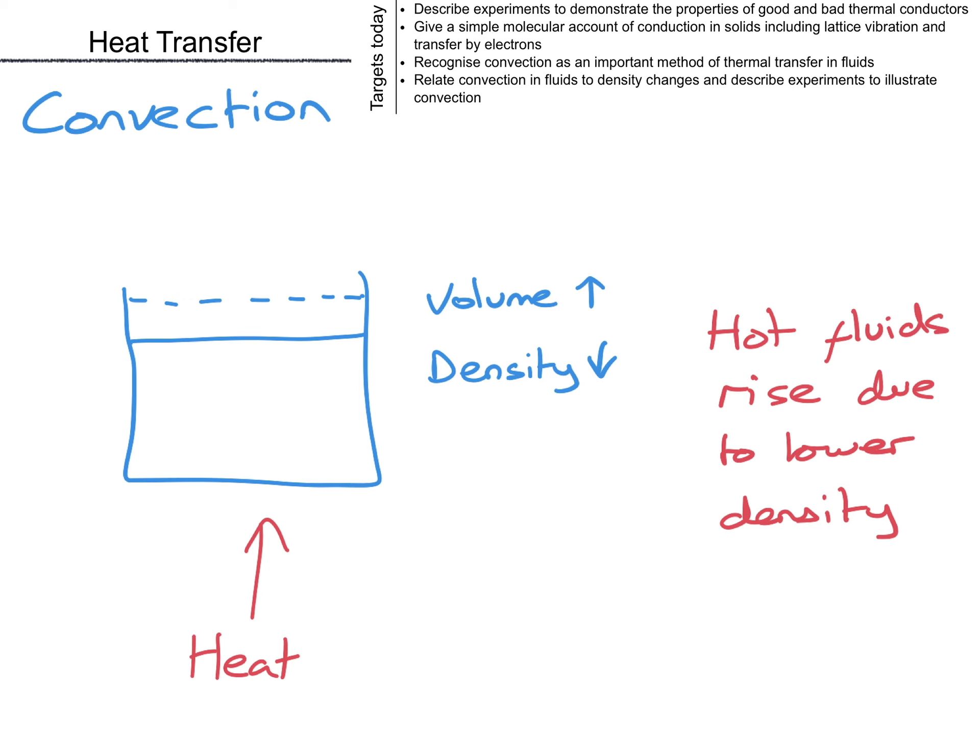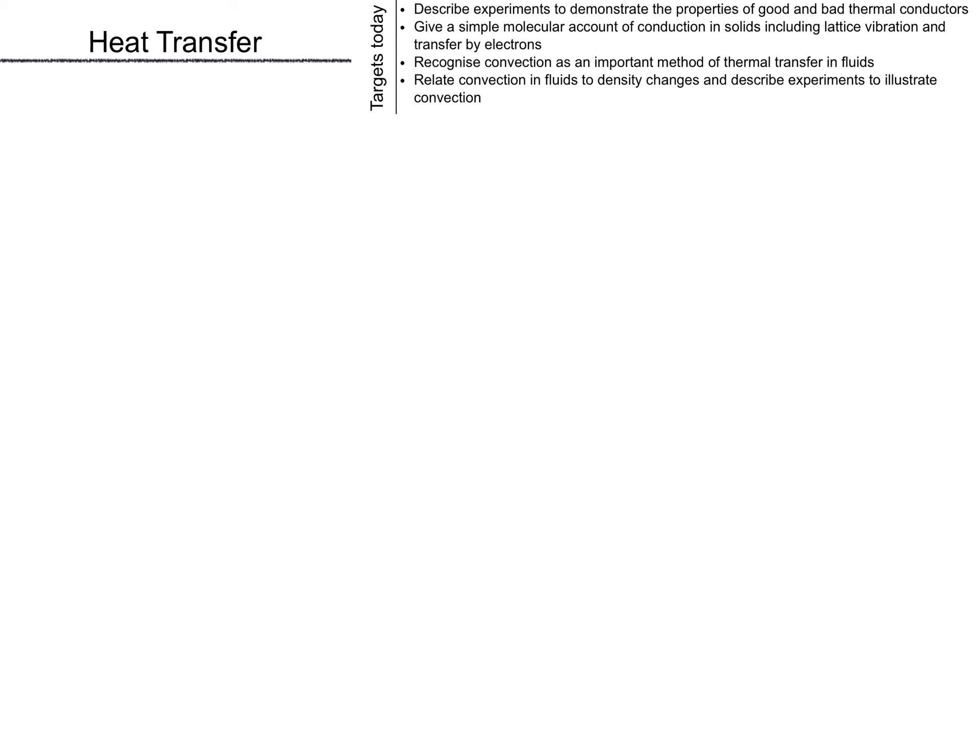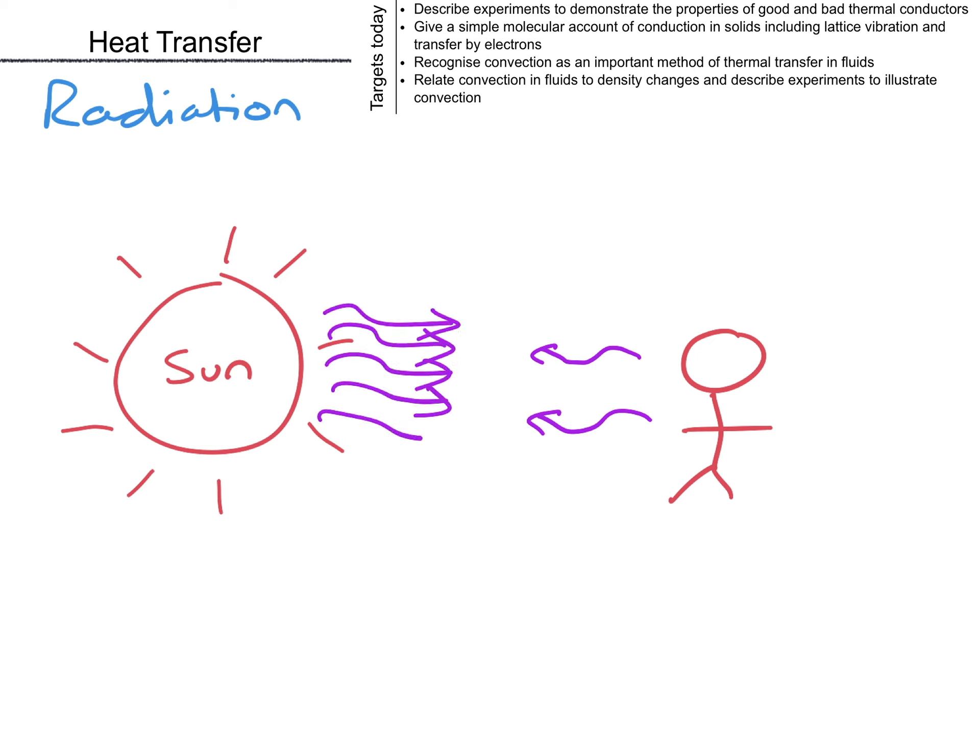For radiation, now all objects radiate infrared all the time. That's why you can see people with an infrared camera. Right now I'm radiating energy to the Sun, but the Sun is radiating a lot more to me, so we normally just ignore me. You will have noticed that if you go out on a hot sunny day wearing black, you get hot quicker.